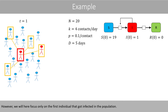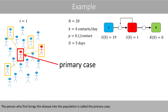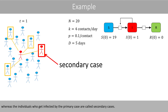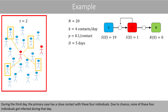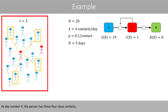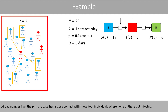We will here focus only on the first individual that got infected in the population. The person who first brings the disease into the population is called the primary case, whereas the individuals who get infected by the primary case are called secondary cases. During the third day, the primary case has a close contact with these four individuals, and due to chance, none got infected. At day four, this person happened to get infected. At day five, the primary case has a close contact with these four individuals, where none got infected.